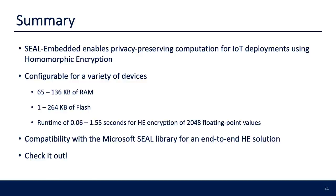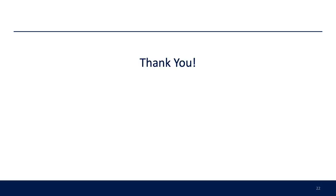In summary, we presented SEAL Embedded, an HE library for the Internet of Things, which enables privacy-preserving computation for IoT deployments. SEAL Embedded is configurable for a variety of devices, requiring between 65 and 136K of RAM and 1 to 264K of Flash. The library takes between 0.06 and about 1.5 seconds for HE encoding and encryption of 2048 values, and is compatible with the Microsoft SEAL library for an end-to-end HE deployment solution. The library is open source and available at the link in the description.